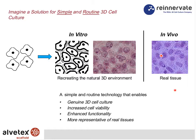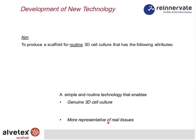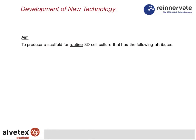Imagine a simple and routine solution for 3D cell culture — this is what we're all about. We are trying to recreate a natural three-dimensional environment for cell growth, to enable cells to acquire a structure more like what they acquire in vivo, getting closer to the in vivo situation. This will enable cells to have increased viability, functionality, and be more representative of the real tissue they represent. These steps led to the development of the technology we sell today, known as Albatex.